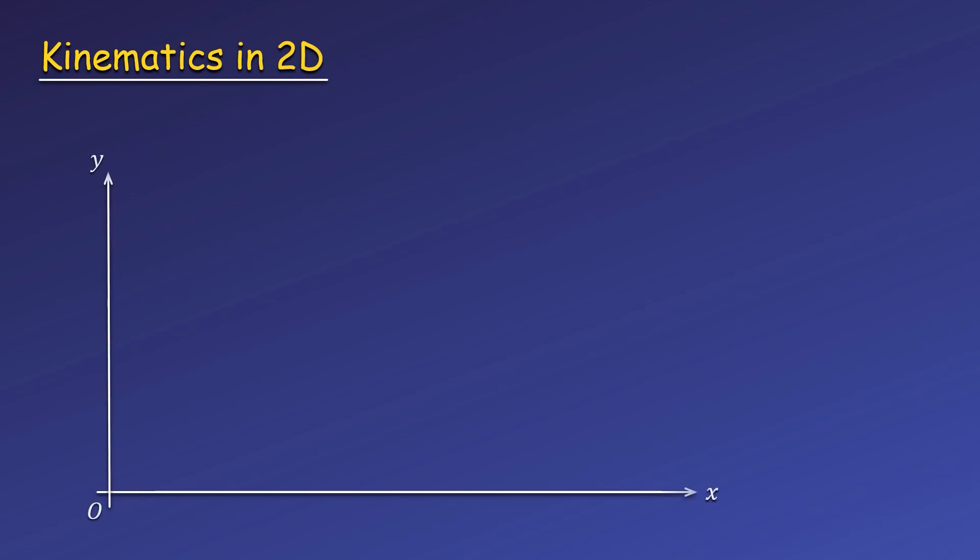In this video, we're going to look at kinematics in two dimensions and a special case called projectile motion. We can track the motion of an object through space using an x-y coordinate system. The position of an object at any point along its path can be given by x-y coordinates, which just give you the x and y distances from the origin.